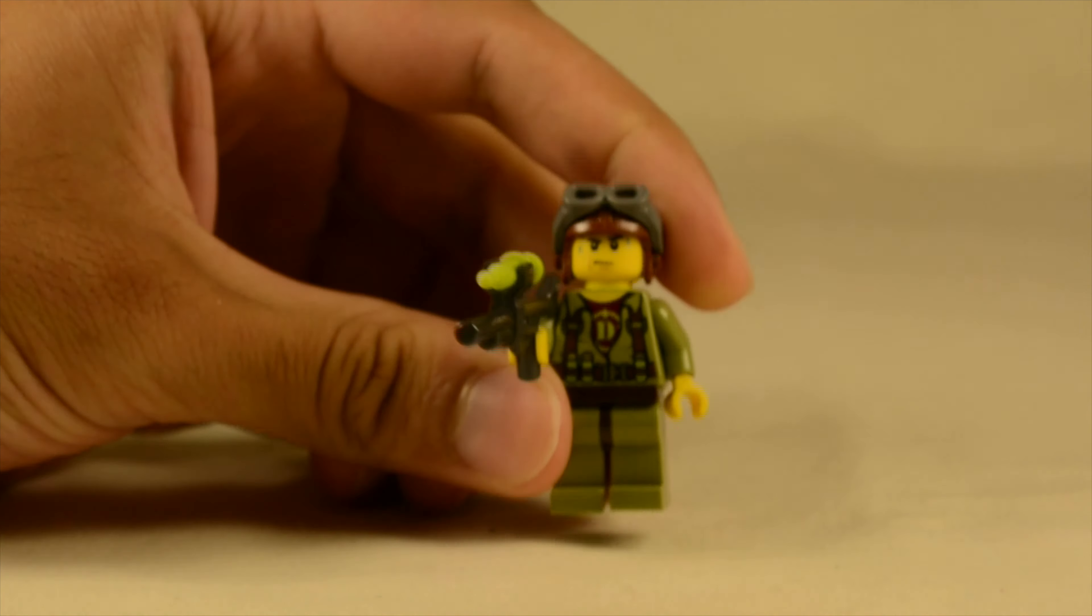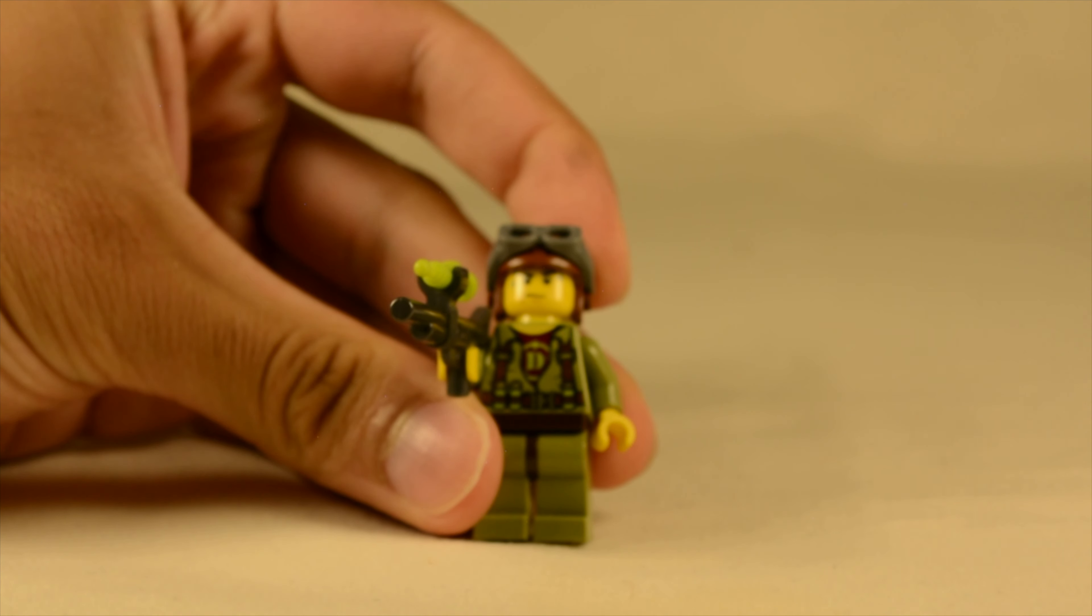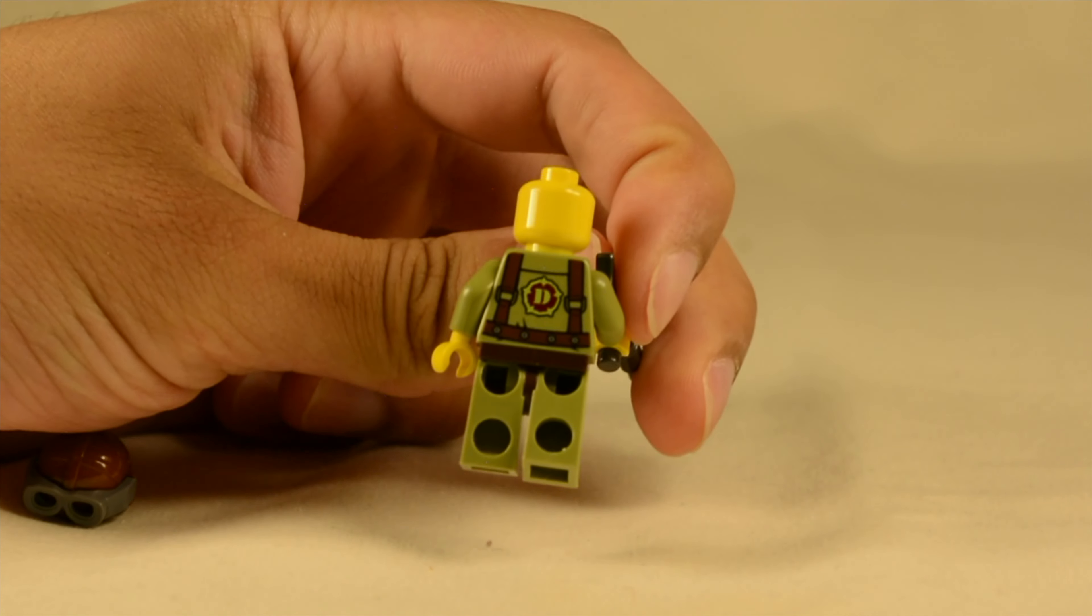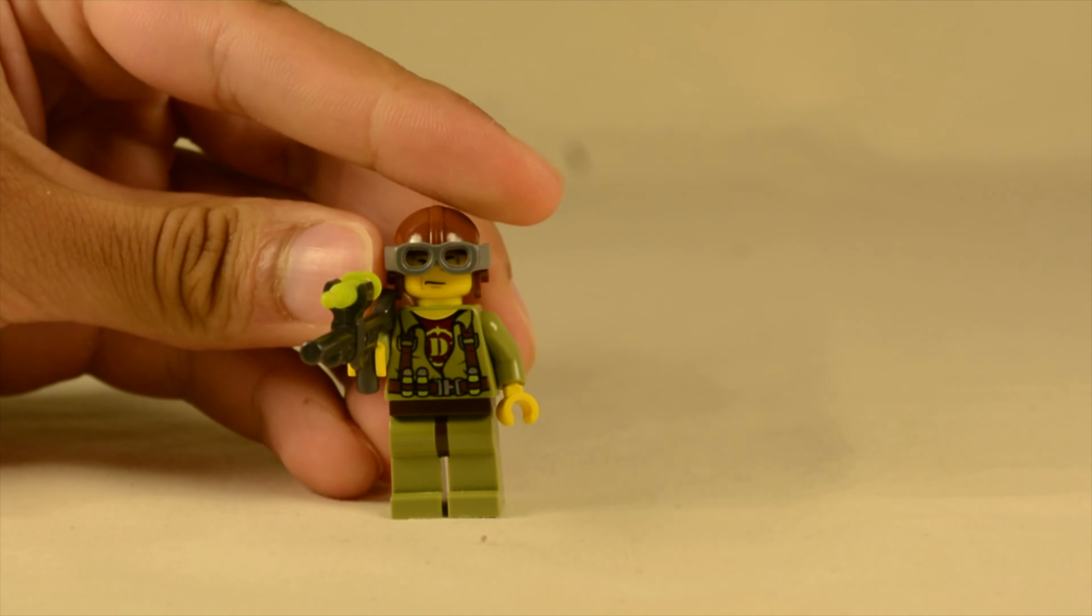He has the interesting dino patrol logo just a D on his shirt. You can take off his helmet just to see that a little better and then on the back he just has the mirroring of the print on the front. Yeah that's pretty much it for this minifigure. Let's see if I can get his head back on and yeah.